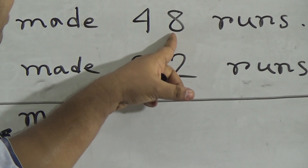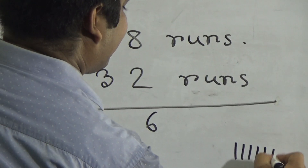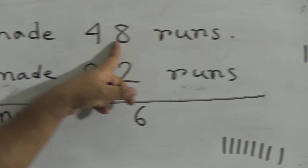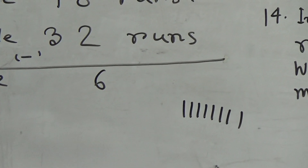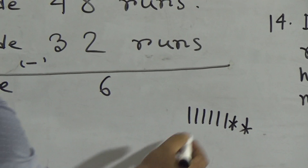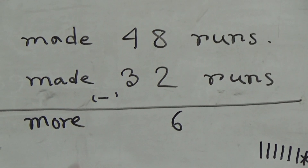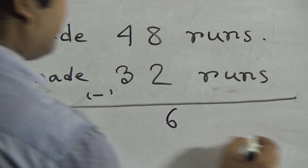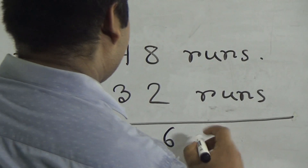We write Manik's team made 48 runs and Tuhin's team made 32 runs. We do subtraction — you must write the subtraction sign and write 32 under 48, that means 2 under 8 and 3 under 4. If we subtract 2 from 8, we get 6. We draw 8 sticks and cut 2, leaving 6. Then we subtract 3 from 4 — draw 4 sticks, cut 3, leaving 1. So the result is 16 runs.